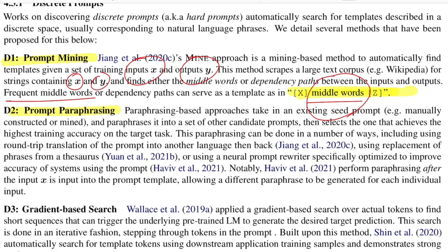The second method is prompt paraphrasing. The aim is to generate diversified templates from a seed template, which is either constructed manually or mined automatically. A paraphrasing function is applied to candidate templates to get other candidate templates, and eventually the one giving higher accuracy is selected. Paraphrasing can be done via round-trip or back-translation or by replacing phrases from a thesaurus. Javi Vatal in 2021 proposed paraphrasing after inputting the X sample into the prompt template, with paraphrasing happening at both the input level and the template level, giving diversification in the input space as well.